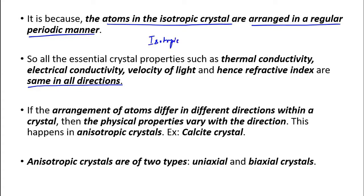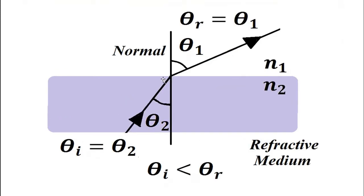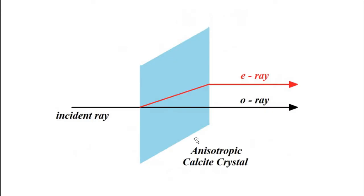When refraction takes place through an isotropic material such as a glass slab, it occurs as a single ray. One ray travels into the slab, bends towards the normal, then at the other interface bends away from the normal and passes out as a single ray. But when the material is anisotropic — such as a calcite crystal, which is used to study double refraction — refraction takes place differently: the single incident ray is split into two rays.